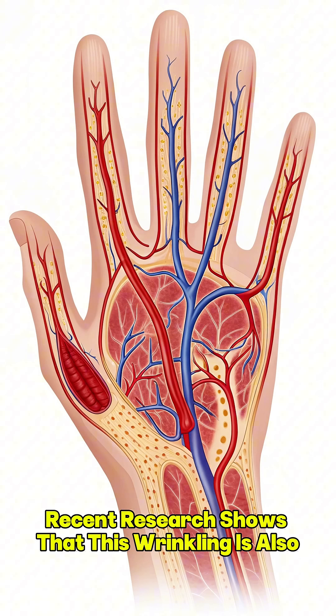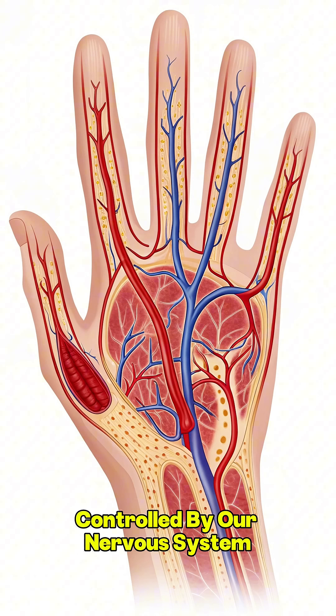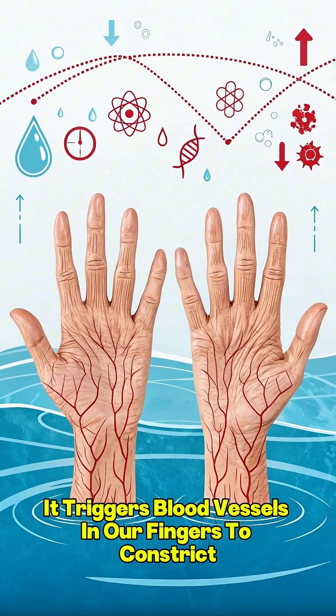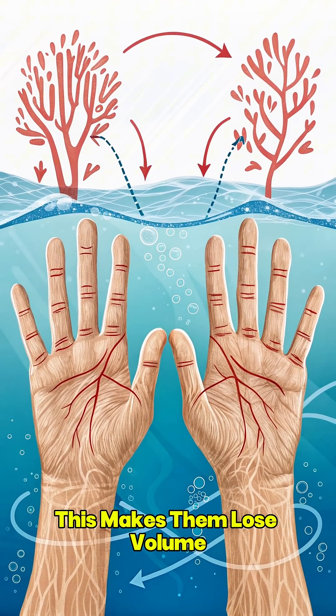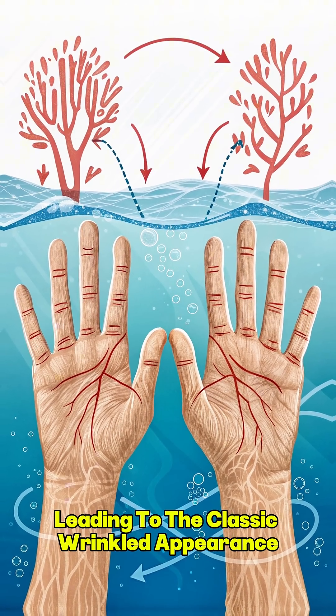Recent research shows that this wrinkling is also controlled by our nervous system. When submerged, it triggers blood vessels in our fingers to constrict. This makes them lose volume, leading to the classic wrinkled appearance.